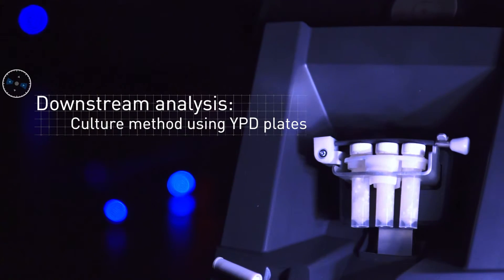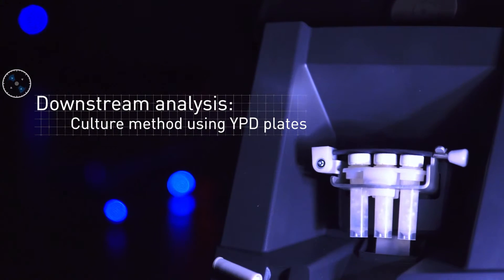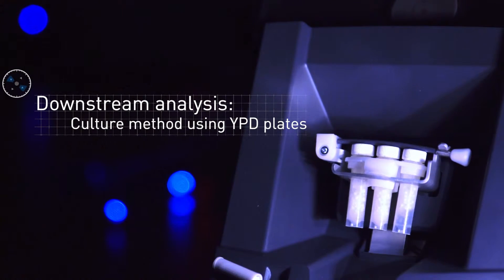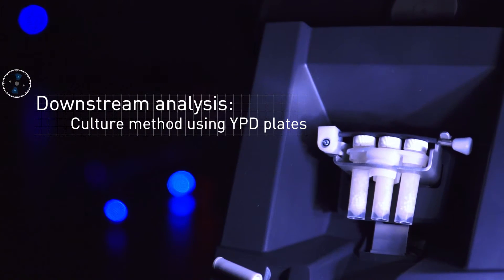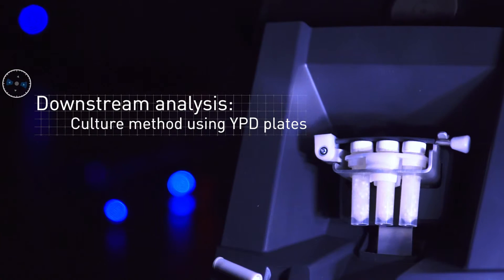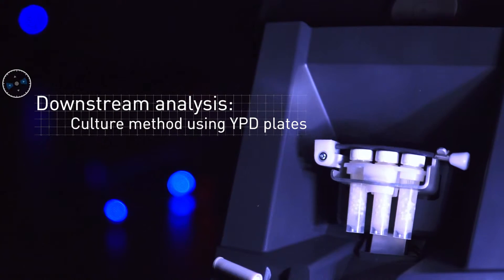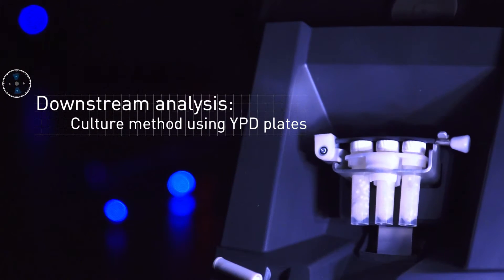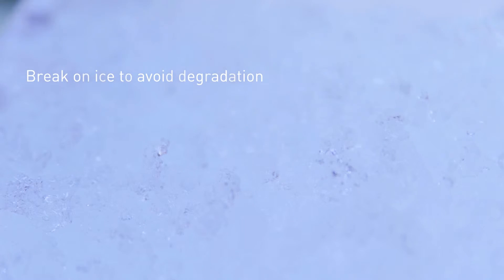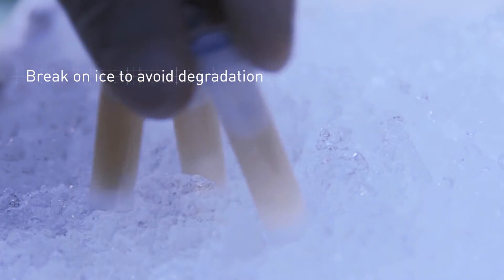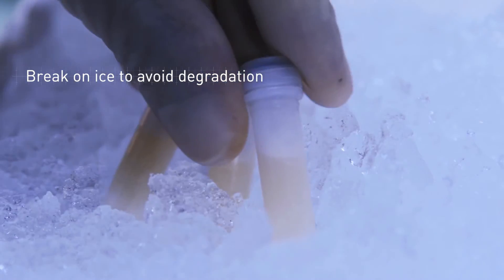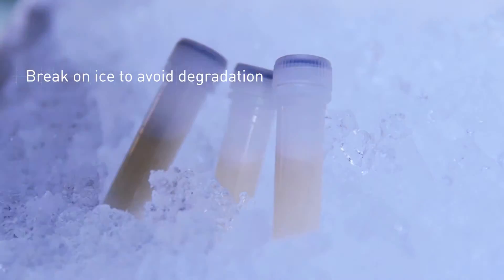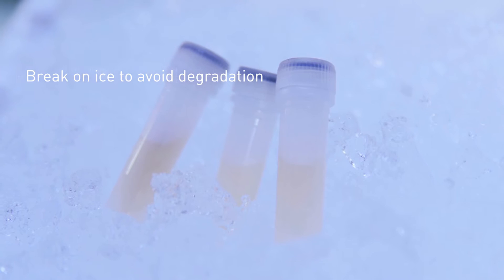Candida concentration is assessed by cultural methods after spreading 100 microliters of a 100-fold dilution in YPD plates. The tubes should be put on ice after every 40-second cycle to avoid sample heating and degradation.